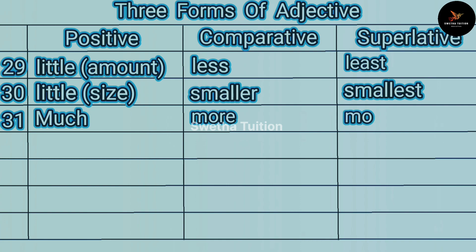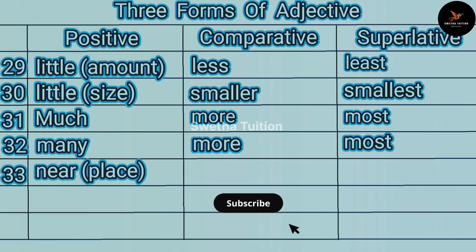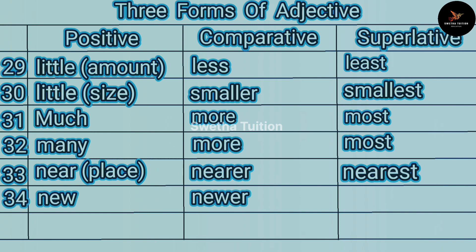Number thirty-one: much, more, most. Number thirty-two: many, more, most. Number thirty-three: near (for place) nearer, nearest. Number thirty-four: new, newer, newest.